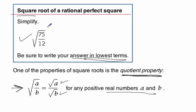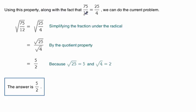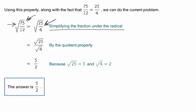Let's look at how we apply that to this problem. Notice that we've got 75 over 12 inside the square root. Our first step is always to simplify the fraction under the radical sign. We know that 75 over 12 simplifies to 25 over 4. That's really nice because 75 is not a perfect square and neither is 12, but when we reduce it we get two perfect squares, 25 and 4.